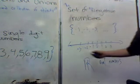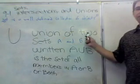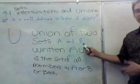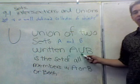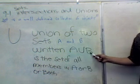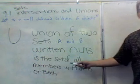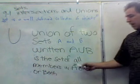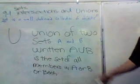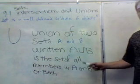But anyway, that's another story. For now, all you need to know is how to create a set. Now we're talking about the union of two sets. The union of two sets A and B — written with the union symbol — A union B — is the set of all members in A or B or both. And we're going to do some examples from the book from your homework. The set of all members in A or B or both.